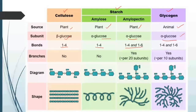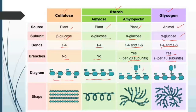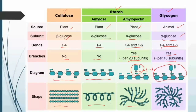In amylopectin, there are both 1,4 and 1,6 glycosidic linkages: the 1,4 linkage forms the linear chain while the 1,6 linkage forms the branched structure, occurring every 20 subunits. Glycogen is similar but branches every 10 subunits. In the diagram, cellulose and amylose appear linear, while amylopectin and glycogen show branched structures due to the 1,6 glycosidic linkages.